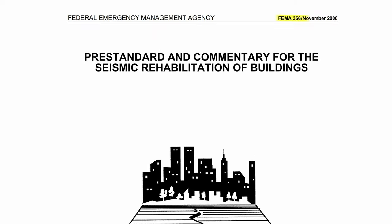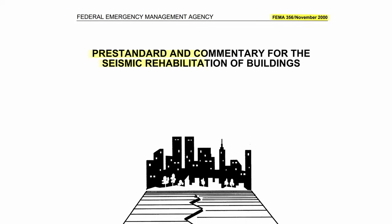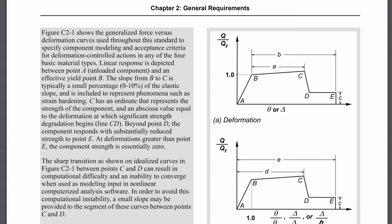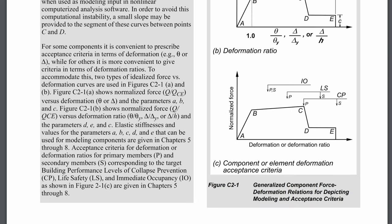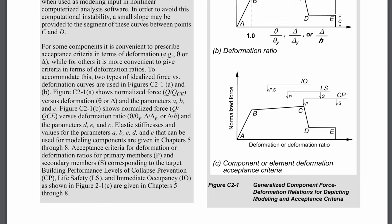There's guidelines in FEMA 273 and 356, which is the seismic rehabilitations of buildings. Now, this gives you guidance on how to approach the design in a performance-based way and when those hinges will form in your building and when those hinges will specifically fail. So, you can slowly and progressively take them out. Now, you could do this by hand, but it'll be painstakingly long, but you want to make sure that you've automated it.